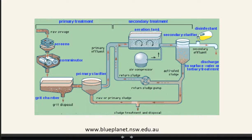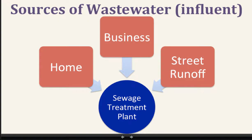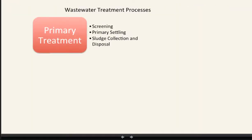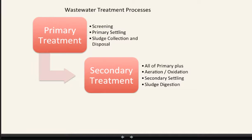Here's another one showing the primary and secondary process. Where does wastewater come from? It comes from homes, businesses, but also street runoff — this is called influent. What flows into the treatment plant is influent. There are three processes: the primary treatment process, which essentially collects screened materials and solids; then the secondary, which does everything the primary does but also oxidizes dissolved organics and includes some sludge digestion.